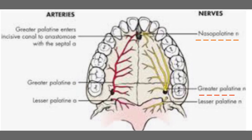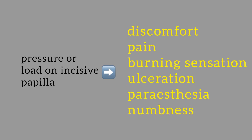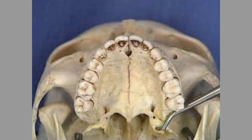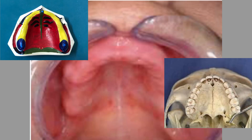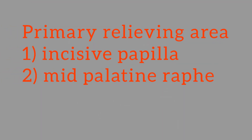The nasopalatine nerve innervates the palate, the structures around the anterior teeth, the frontal, maxillary, ethmoid and sphenoidal sinuses, the nasal septum, and the septal mucosa. It also corresponds with the greater palatine nerve on the opposite side. Along with the nasopalatine nerve, this foramen is also the exit point for the sphenopalatine artery — also called the artery of epistaxis — a branch of the maxillary artery. If the incisive papilla is subjected to constant load, the underlying neurovascular bundle gets compressed, resulting in discomfort, pain, burning sensation, soreness, tingling, ulceration, or even paresthesia and numbness. Also, if resorption has progressed considerably, the incisive papilla comes closer to the crest of the ridge, making it more susceptible to load. So the incisive papilla should not be subjected to any load and becomes the primary relieving area in the maxillary arch.